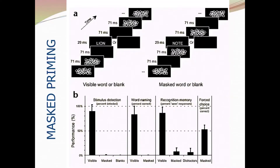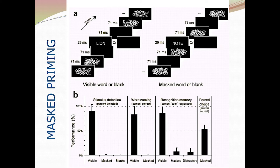Here's how the paradigm works. On the visible side of the slide, the sequence is: squiggle, squiggle, blank, then the target — either a word or a blank — then blank, squiggle, squiggle. On the masked side, the same number of slides are presented in exactly the same amount of time. The only difference is that the squiggle slides are moved relative to the blank slides, so you get: squiggle, blank, squiggle, then target, squiggle, blank, squiggle — the squiggles are right before and after the target.